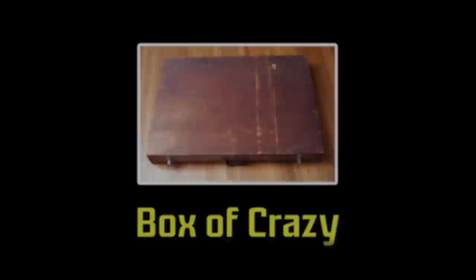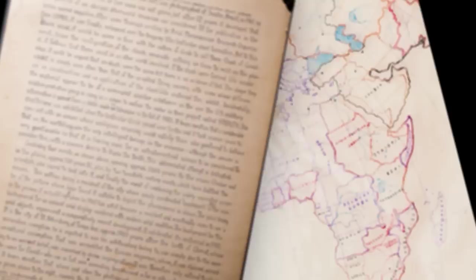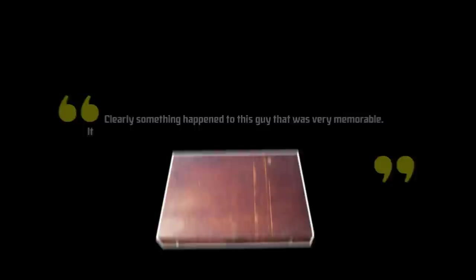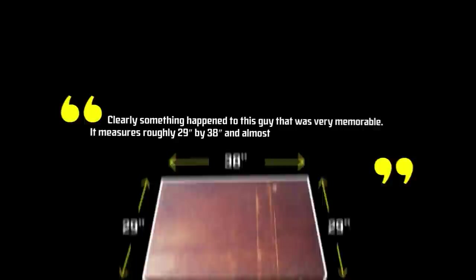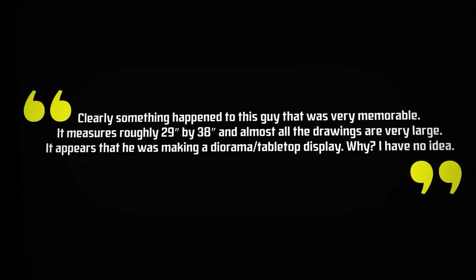The Box of Crazy. In 2013, Reddit got its first glimpse into the madness or possible genius of the so-called Box of Crazy. Posted by Reddit user TrampStopDan and r slash what's in this thing, the contents of the box included some impressive technical drawings and artistic hand-drawn maps, as well as some more bizarre handwritten notes and illustrations containing UFOs and mythical creatures. The old wooden box was allegedly found by Dan's friend just lying in the street next to some trash. When considering who it may have belonged to originally, Dan speculated the quote, clearly something had happened to the guy that was very memorable. It measures roughly 29 by 38 inches, and almost all the drawings are very large. It appears that he was making a diorama slash tabletop display. Why? I have no idea. There are numbered parts and instructions slash explanations.